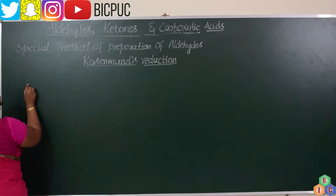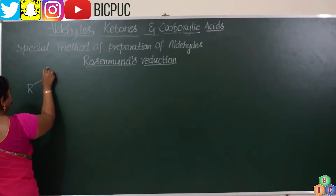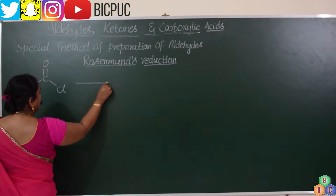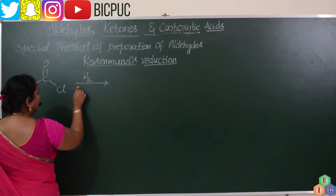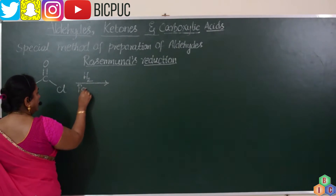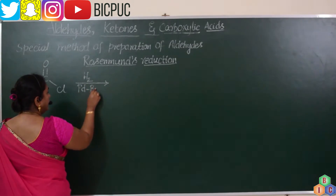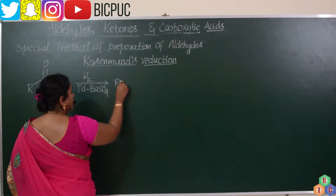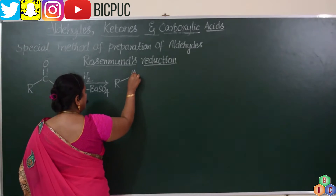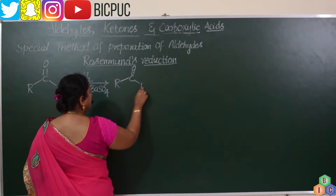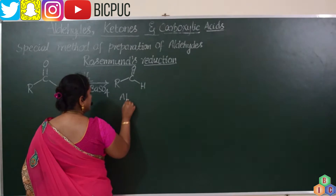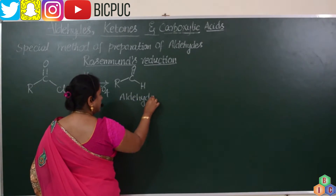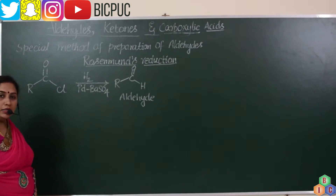Whenever acid chloride or acyl chloride is reduced in the presence of palladium suspended over barium sulphate, it results in the formation of the corresponding aldehyde. The product obtained by this reaction is an aldehyde.